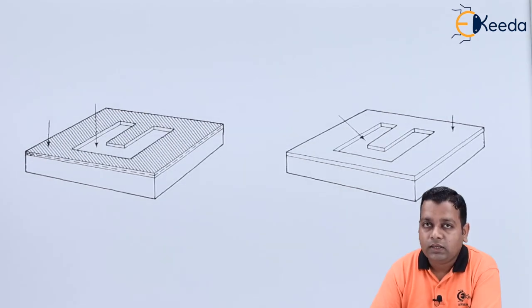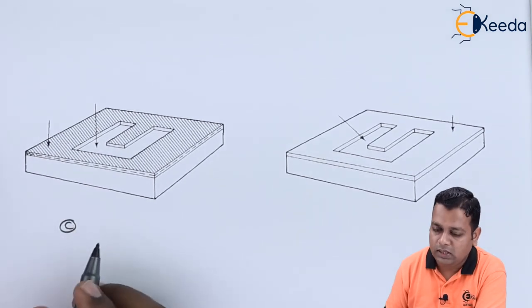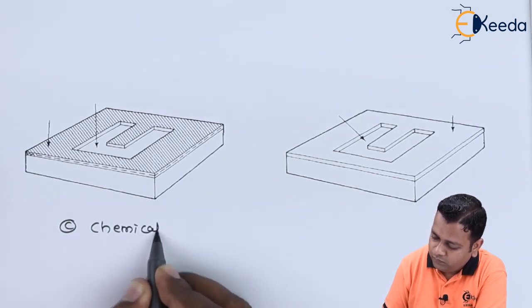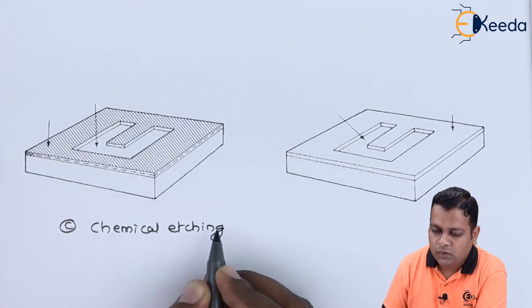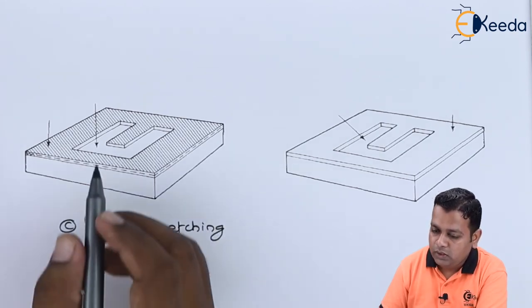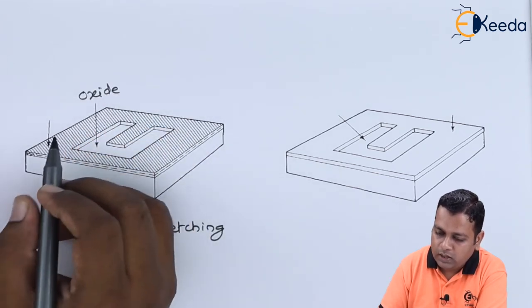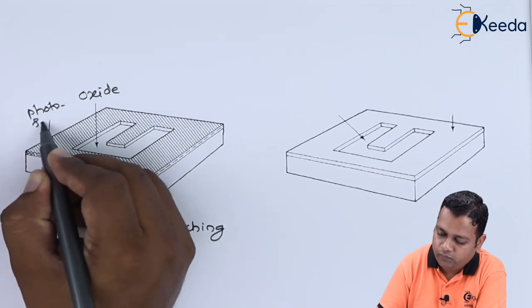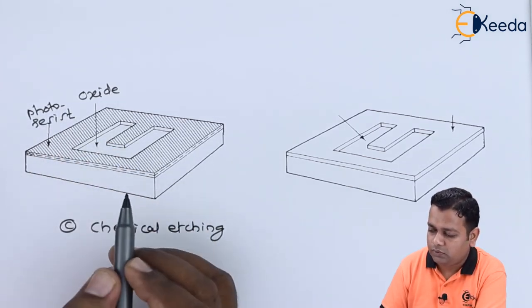So by the next step we can say this is the figure part C. So in figure part C we can perform the chemical etching. So in chemical etching we have the oxide material and the photoresist material that has been shown by the shaded portion.